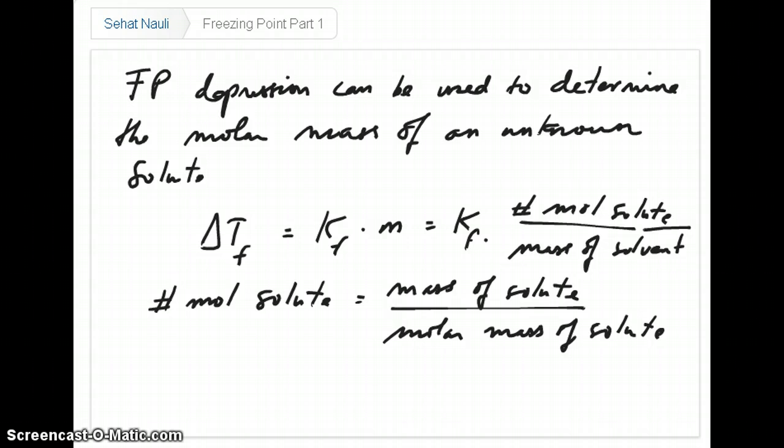Earlier I mentioned that freezing point depression can be used to help us in practical situations. For example, when you spread salt on icy roads, that would reduce the freezing point of water and the road doesn't ice up. However, more classical use of freezing point depression is to determine molar mass of an unknown solute. So the idea here is that, let's say you've synthesized or made a new compound, and one of the first things you want to do is determine its molar mass. Freezing point depression can be used as a technique to help you figure out the molar mass of your new compound.